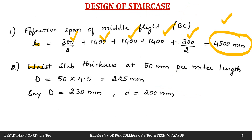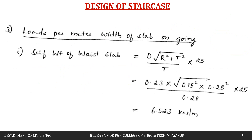Let us assume the waist slab thickness as 50 mm per meter length. Therefore 50 multiplied by the span of 4.5 meters gives d as 225 mm. We assume an overall depth of 230 mm and effective depth of 200 mm, leaving an effective cover of 30 mm.